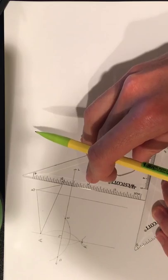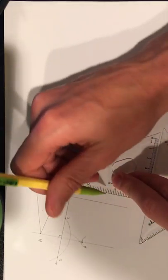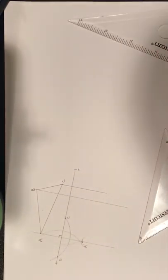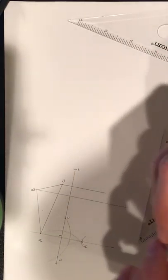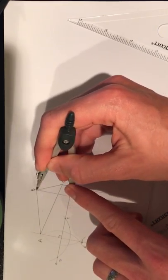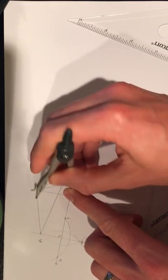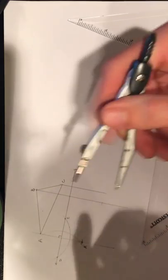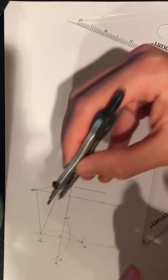Final step: compass out, and we're going to make sure that we mark the same distance from B to the line of reflection as the line of reflection to B prime, and then same with C.